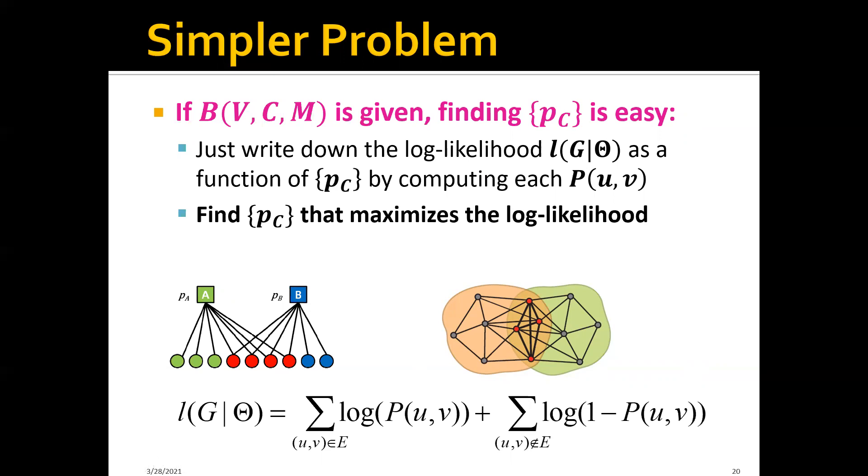And the reason why this is easy is because the PC here is actually a continuous value. Therefore you can, for example, just compute the gradient of this objective function with regard to PC, and you can just use gradient descent to find the optimal PC.